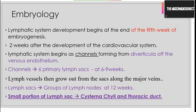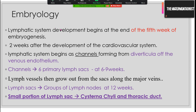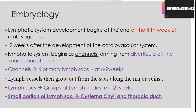Before going into detail about the classification, we will briefly cover the embryological development of the lymphatic system. Lymphatic system development begins at the end of the fifth week of embryogenesis — essentially around two weeks after development of the cardiovascular system. It begins as channels, as diverticula of the venous endothelium, and has a close association with venous channels. These channels give rise to six primary lymph sacs at the end of six to nine weeks, and lymph vessels grow out of the sacs along the major veins.